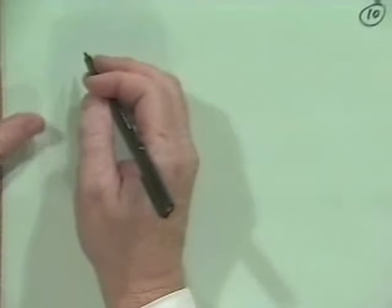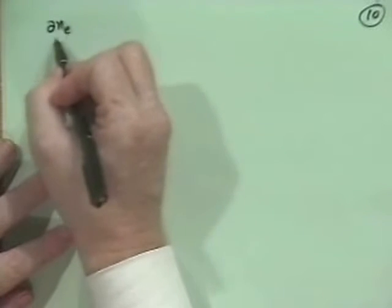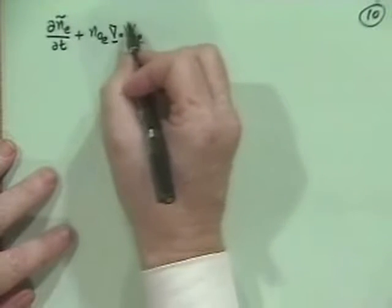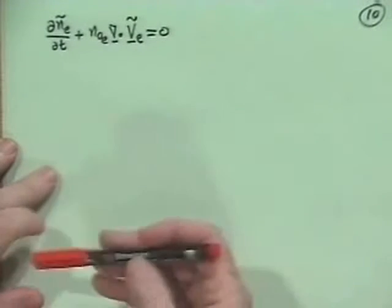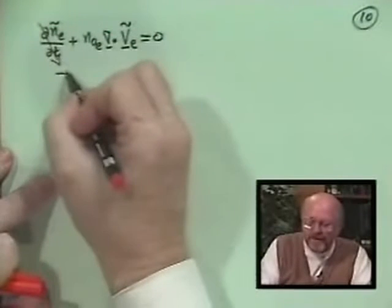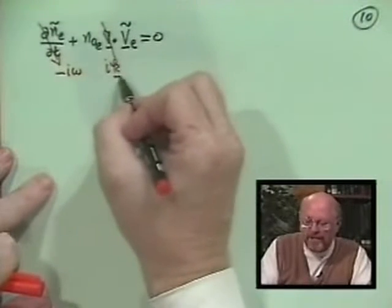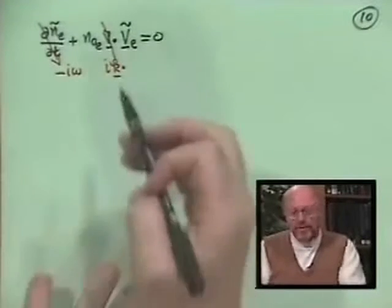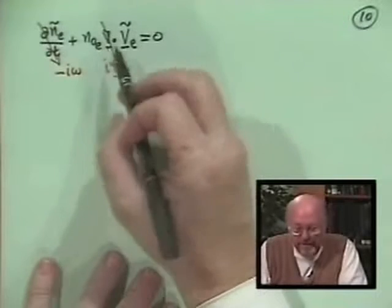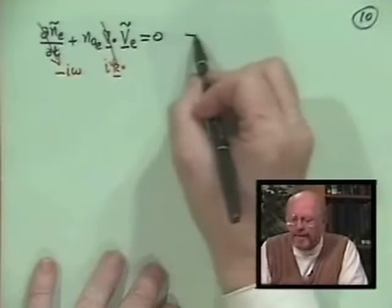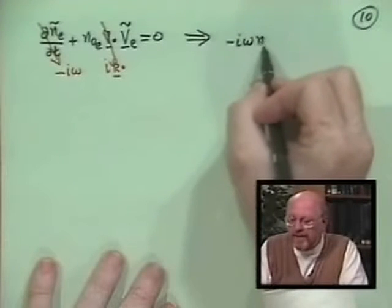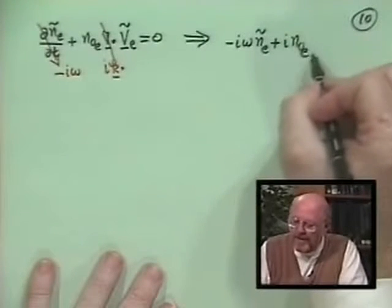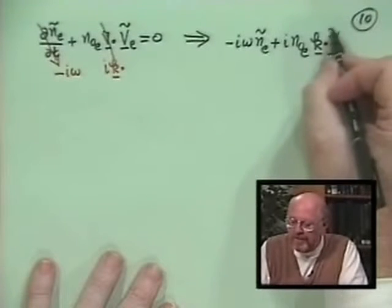Let's just remember what our equations were first. Our density conservation equation: dÑ_E plus N₀_E del dot Ṽ_E is equal to 0. What we do is say partial with respect to T goes to minus iω and del goes to iK vector. This equation just becomes minus iω times Ñ_E plus i N₀_E K dot Ṽ_E is equal to 0.